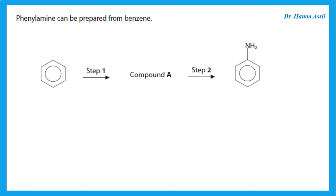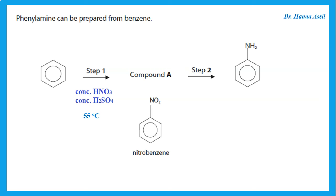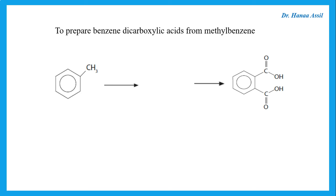What about this simple two-step process? We're starting from benzene and trying to make phenylamine. To put an amine on a benzene ring, we first react benzene with concentrated nitric acid and concentrated sulfuric acid at 55°C to get nitrobenzene — that is compound A, the intermediate. Then to change nitrobenzene to phenylamine, we use tin in the presence of concentrated HCl. Be sure to include the conditions necessary for the reaction.